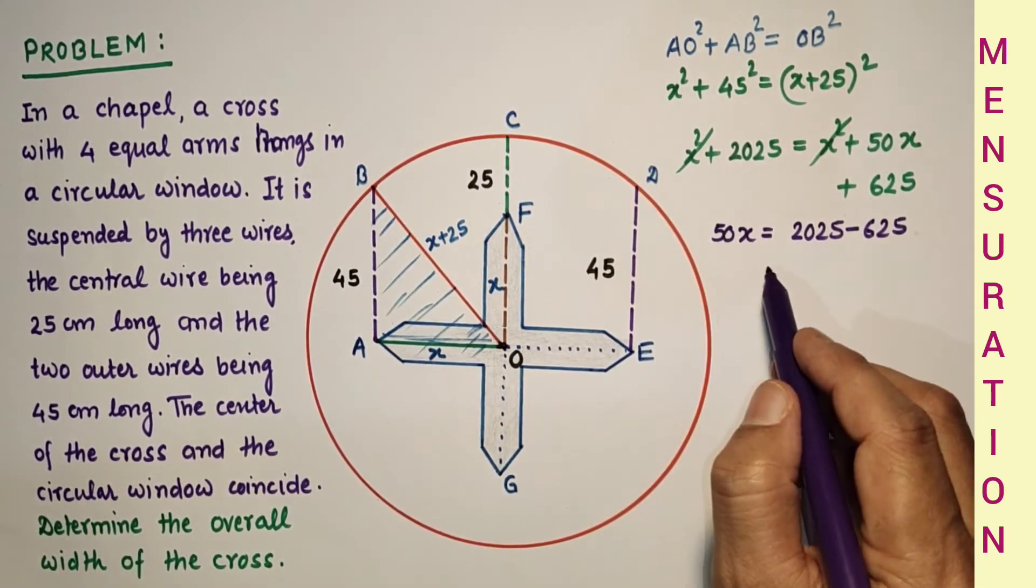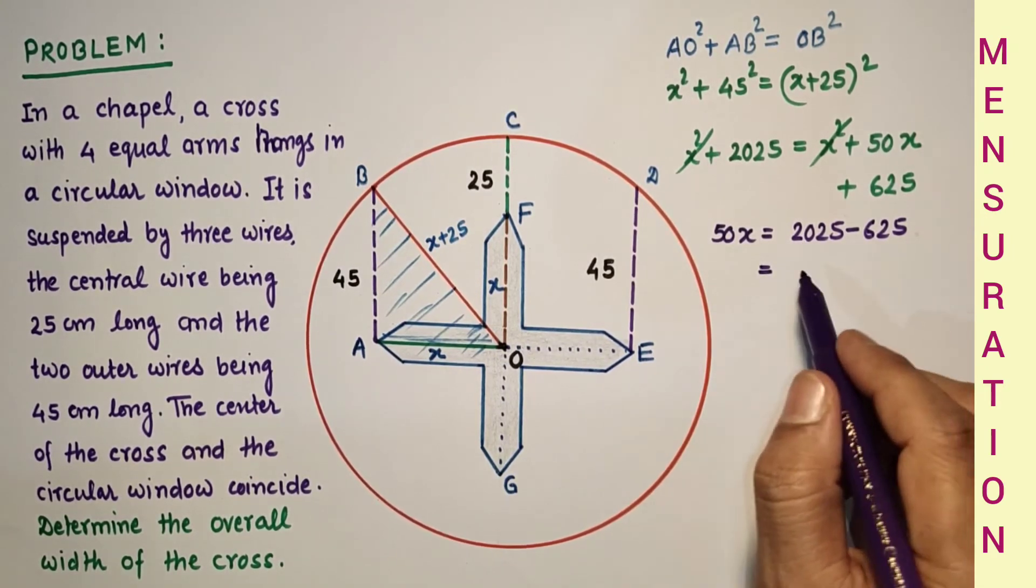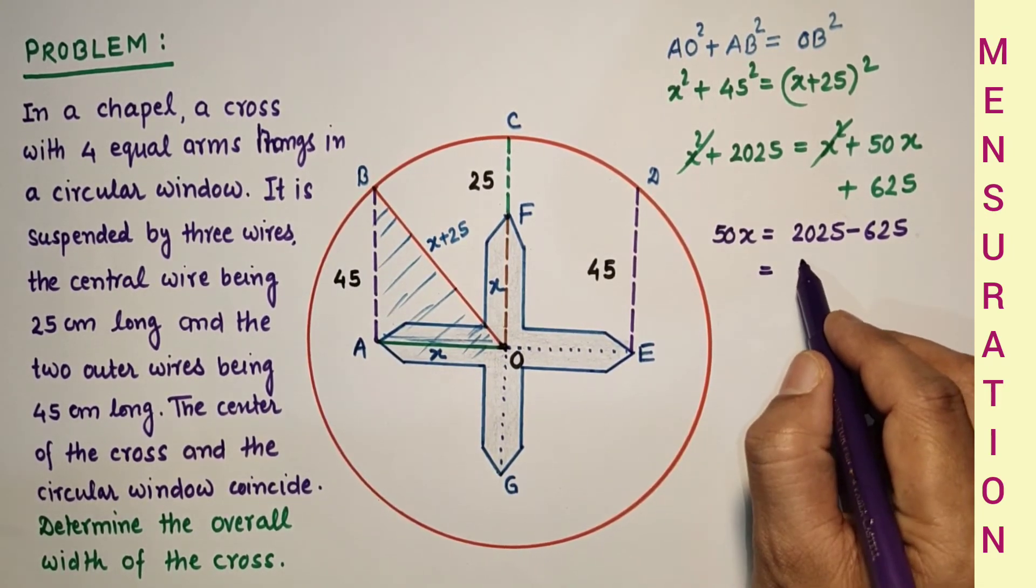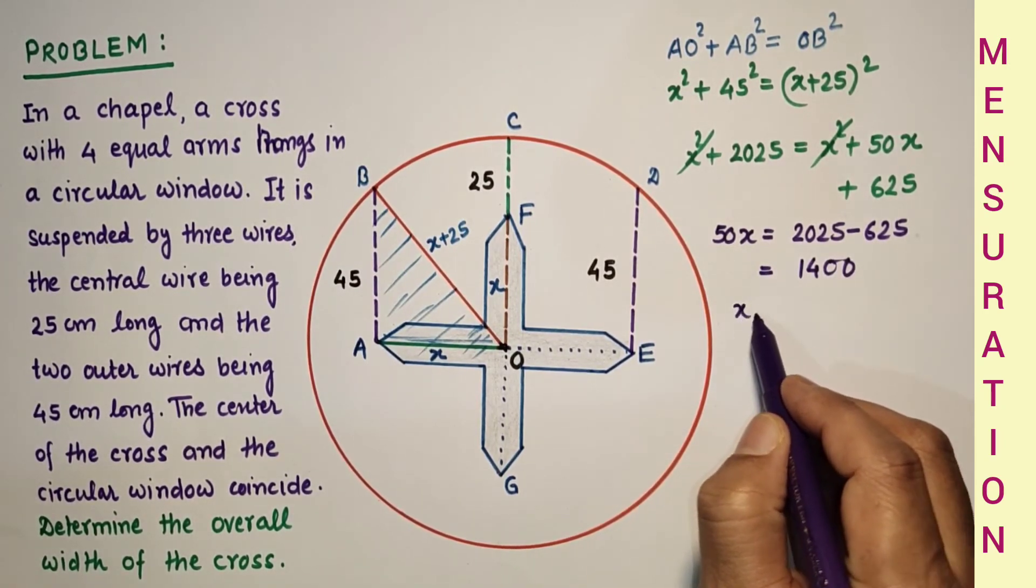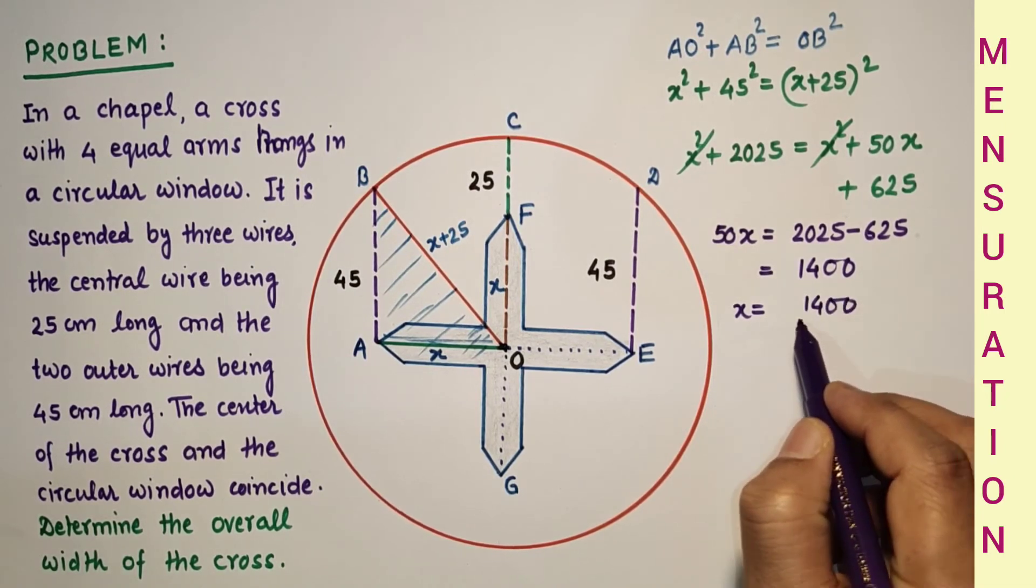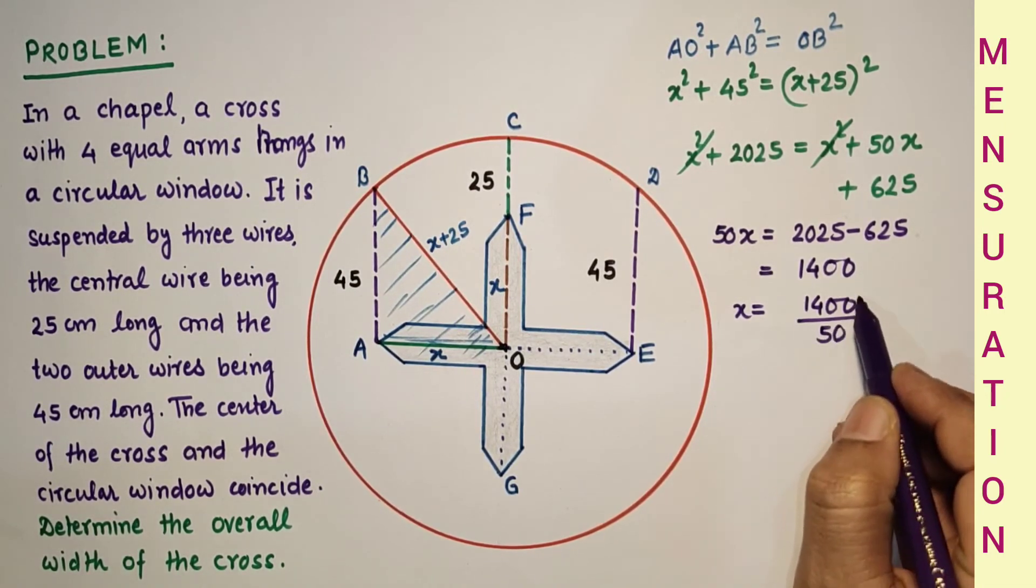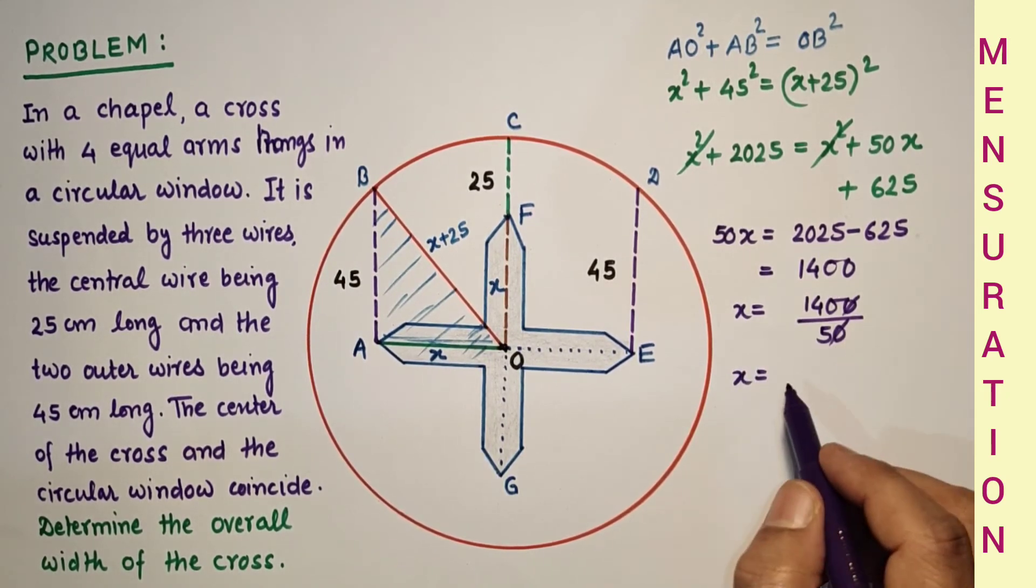50X is equal to 2025 minus 625, which is 1400. And therefore X is equal to 1400 by 50. So X is equal to 280 by 10, which is 28, and that is in centimeters.